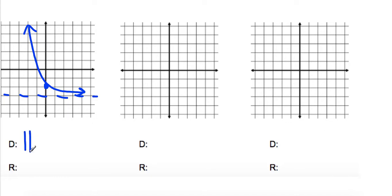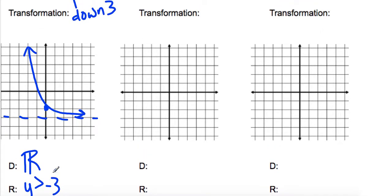Our domain is all real numbers. And our range is greater than negative 3, because we moved it down 3.